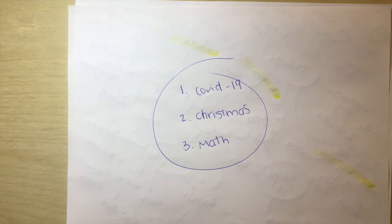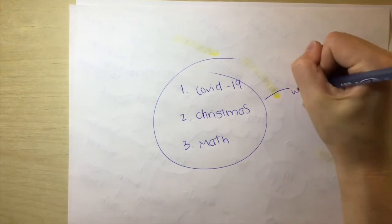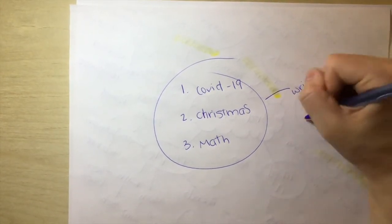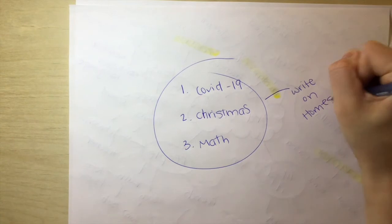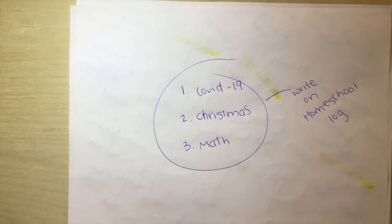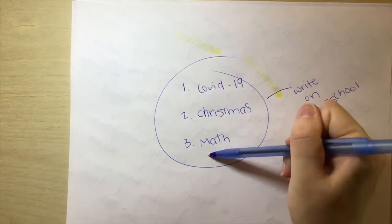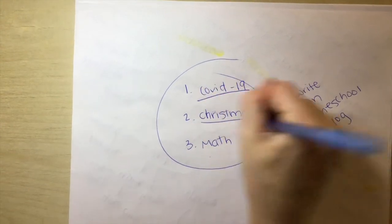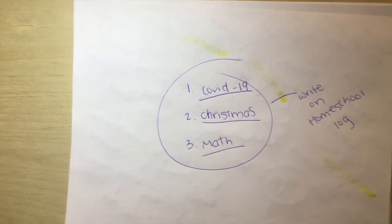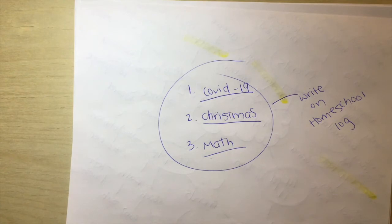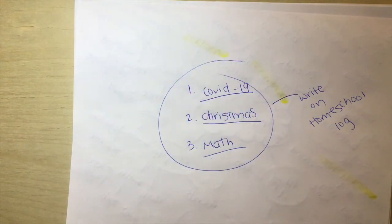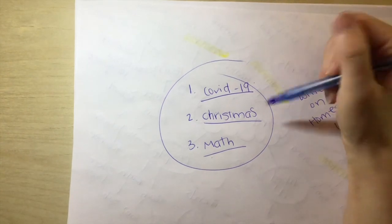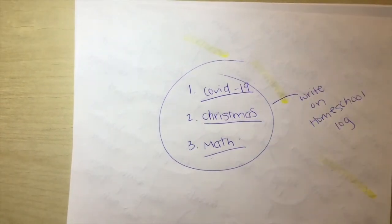And then what I want you to do is go write these three things on your homeschool blog. So I'm going to give you a hint. One, two, three, three paragraphs. You're going to write one paragraph, another paragraph, and another paragraph on these three things. So choose things that are important. Remember five paragraphs are about five sentences. So can you explain COVID-19 in five sentences, Christmas in five sentences, and math in five sentences? So go write this on your homeschool log and you are done for today.